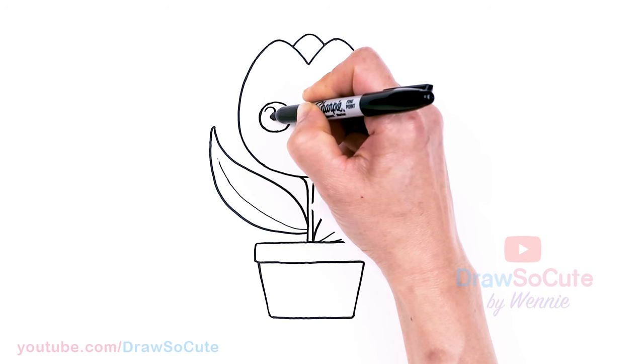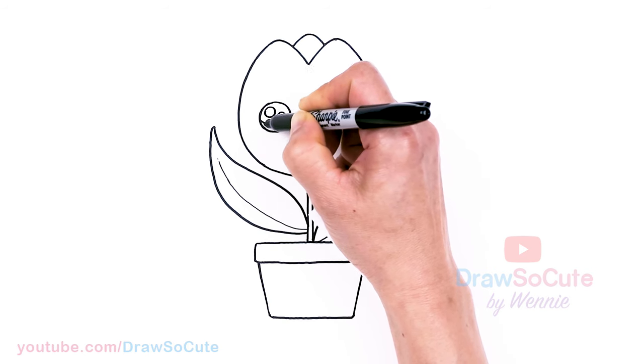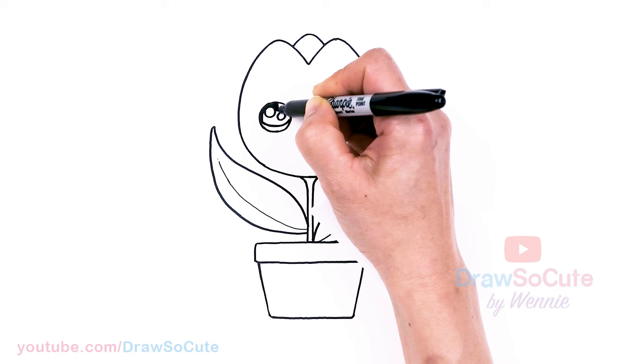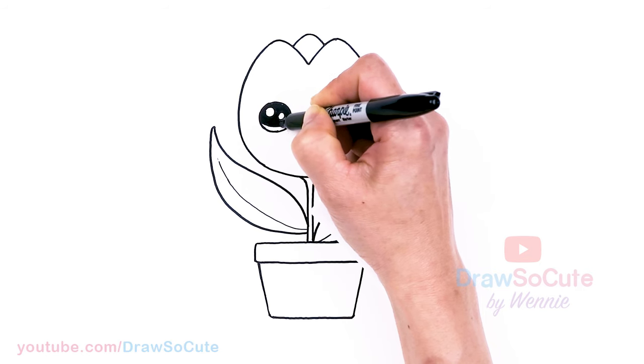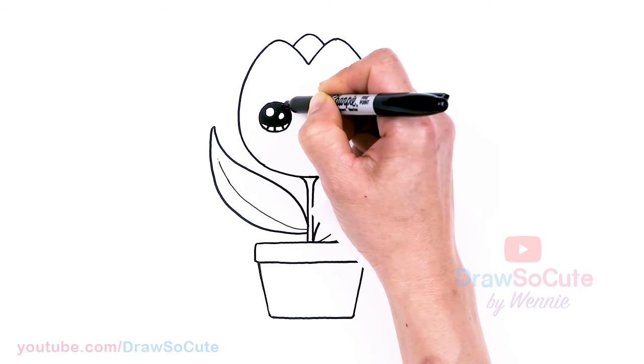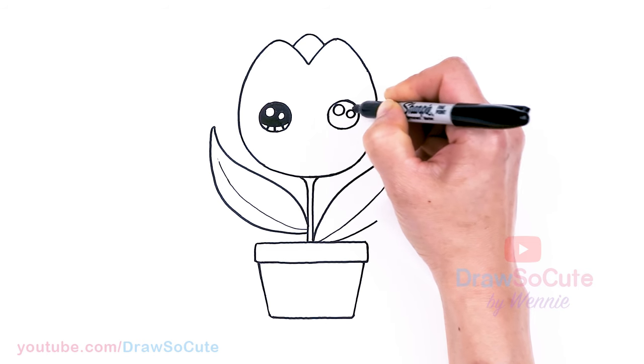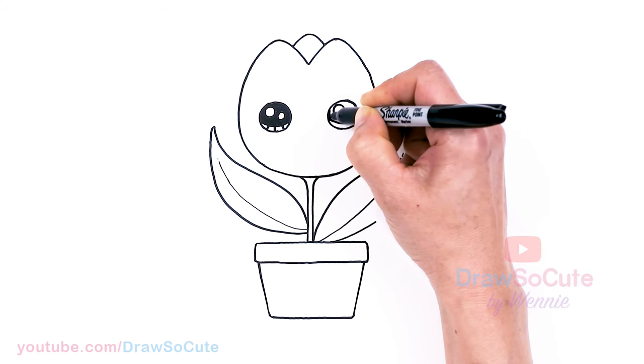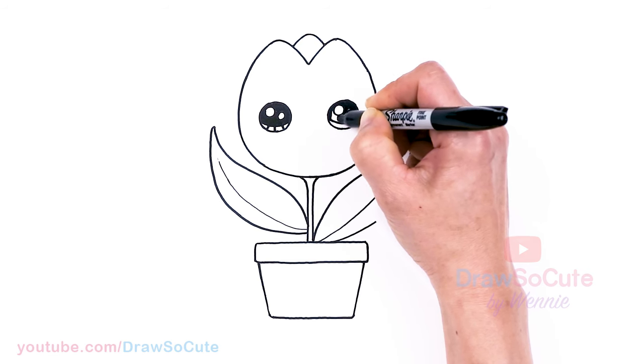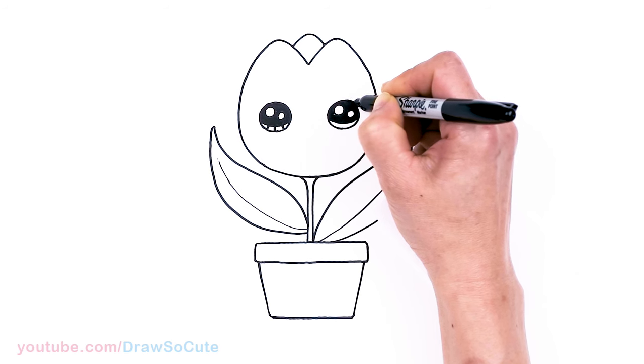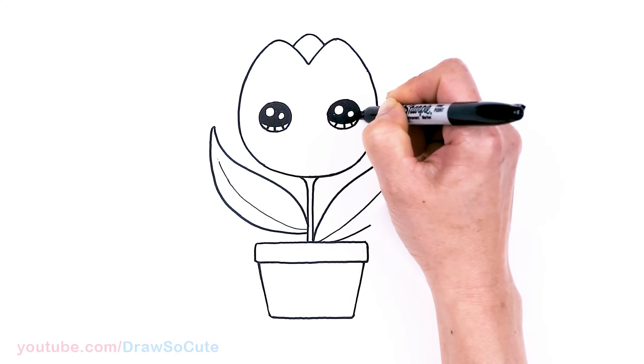Okay so we have two big circles in. Let's make them draw so cute eyes with two small circles inside for highlights. And a curve line at the bottom. And shade in the top. And lines at the bottom. And same thing over here.